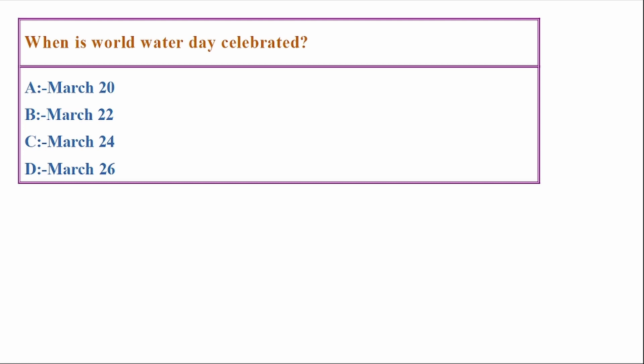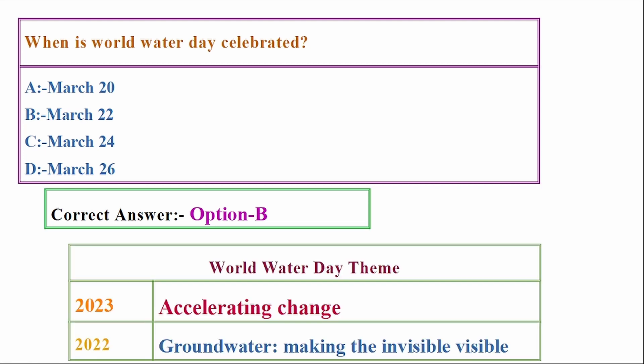When is World Water Day celebrated? Options: March 20, March 22, March 24, March 26. Correct answer: Option B, March 22. World Water Day, March 22. Water Day theme: World Water Day theme 2023, accelerating change. 2022: groundwater making the invisible visible. 2023, March 22, World Water Day theme: accelerating change.